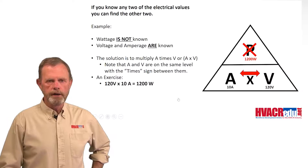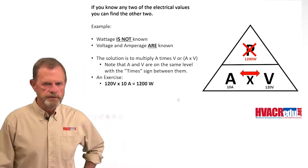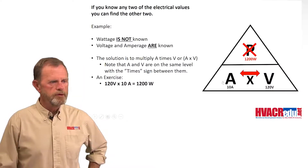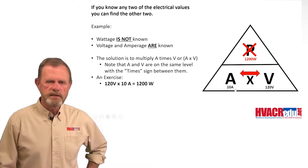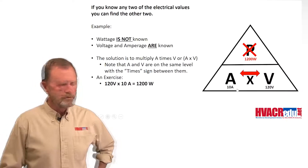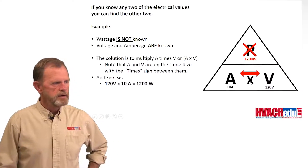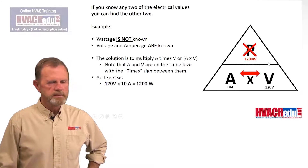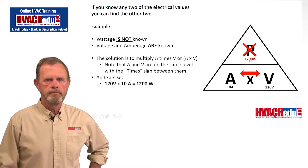We don't know the wattage for this device, but we know the amperage and the voltage. Use the multiplication sign: 10 amps times 120 volts is going to give me 1200 watts.